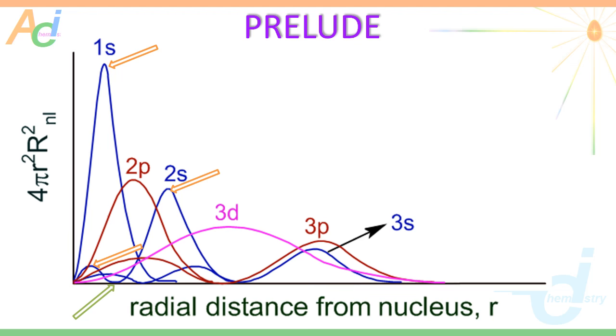Finally, this is the curve for the 3d orbital. There is only 1 peak, which means there is no radial node for the 3d orbital.